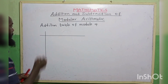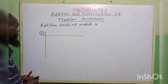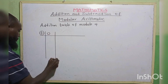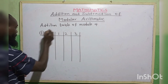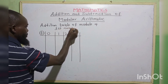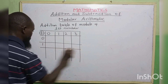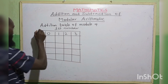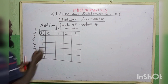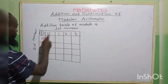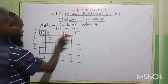Addition table of modulo 4. We use a special sign to show addition in modulus, to differentiate it from addition in algebra. The first number goes 0, 1, 2, 3, and the second number also goes 0, 1, 2, 3. Now, 0 plus 0 is 0. 0 plus 1 is 1. 0 plus 2 is 2. 0 plus 3 is 3.